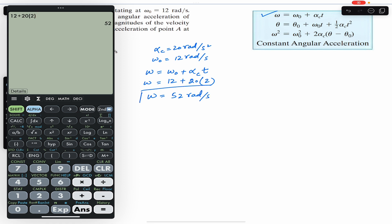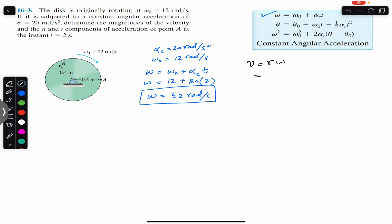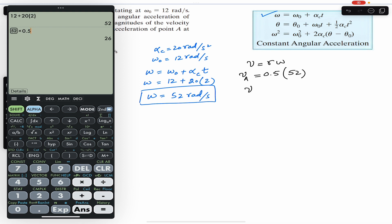Now we want to find the linear velocity after 2 seconds for point A, since we are required to find the velocity and normal and tangential components of acceleration of point A. For point A, the radius is 0.5 meters. The linear velocity v_A equals r times omega, so v_A equals 0.5 into 52, which gives us 26 meter per second.